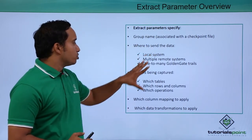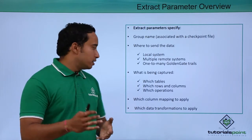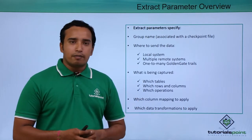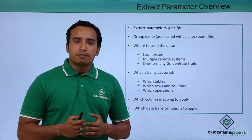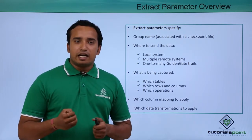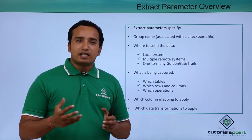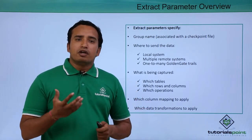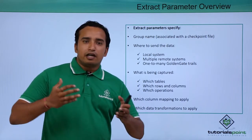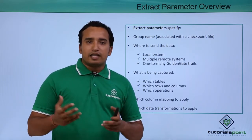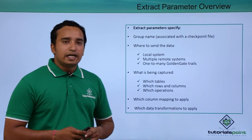So the two key questions are: where to send the data, and what data are you capturing? Once all these parameters are specified, you can do column mappings, change column names, or perform transformations — such as extracting data from specific tables, from all tables in a schema, or based on a where condition, for example where country equals America. This is what we call data transformations.